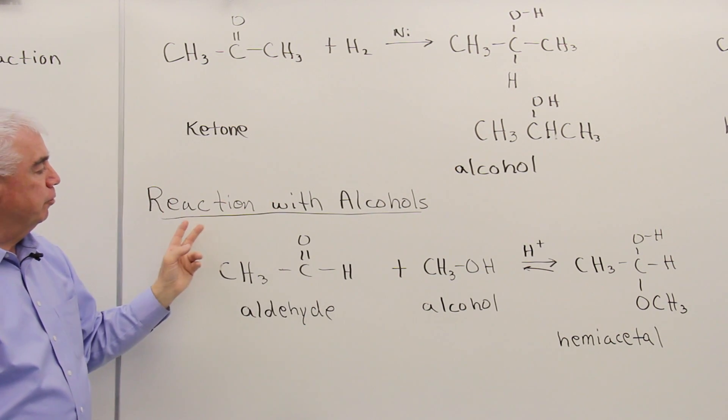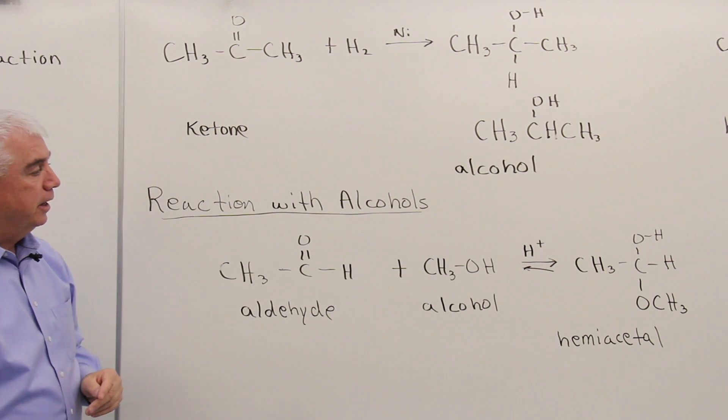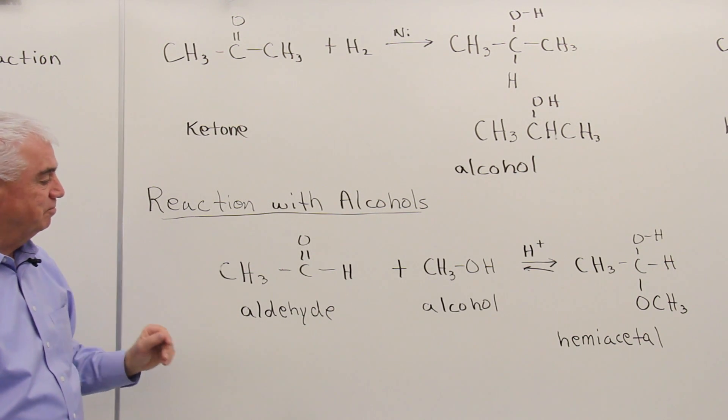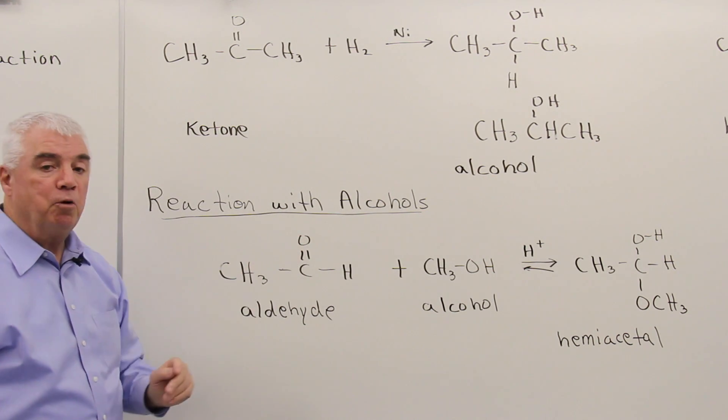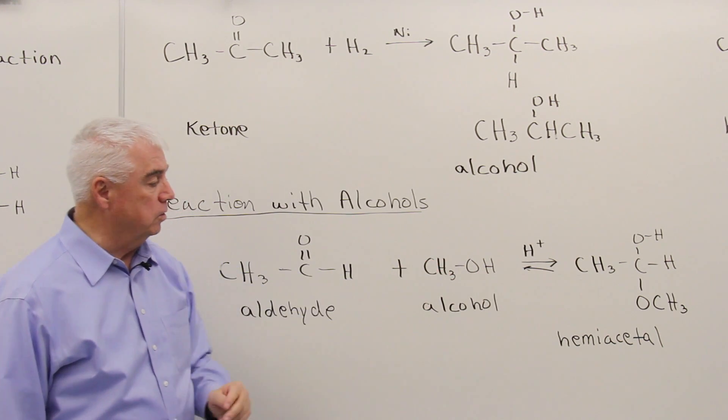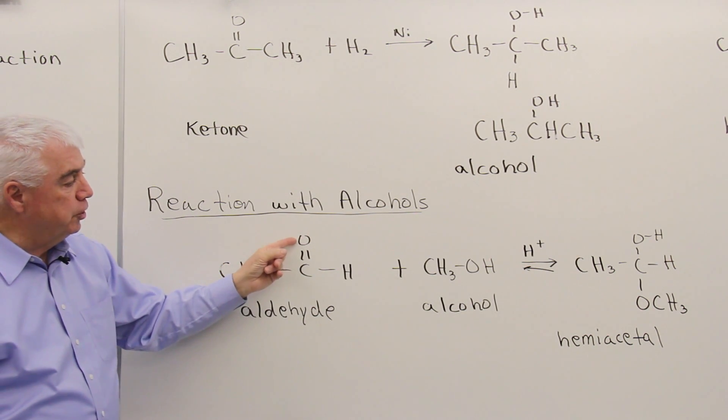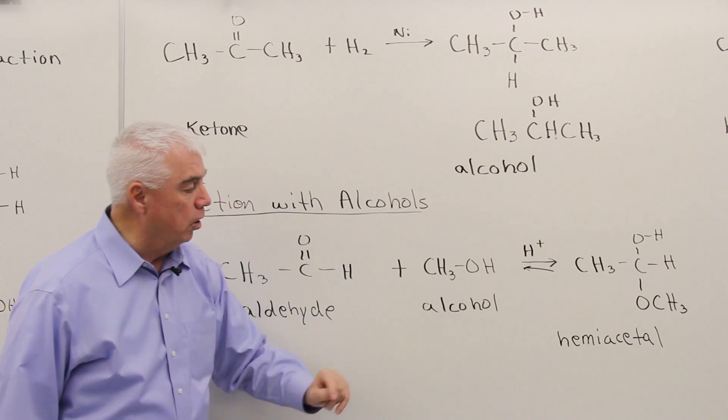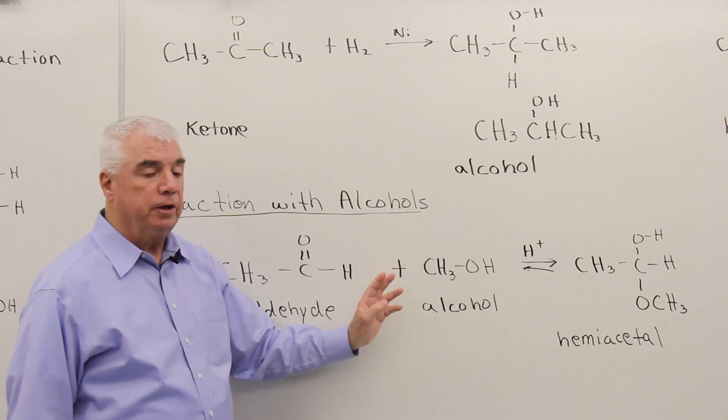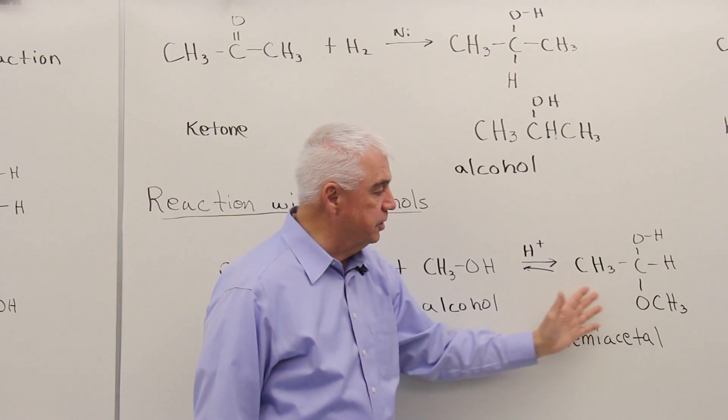The next category of reactions are reaction with alcohols. And this maybe is the most complex reaction that we've looked at so far. Let's see if we can make some sense of it. An aldehyde - remember the C double bond O is the reactive portion. It's so reactive, as a matter of fact, that it can react with alcohols. And the alcohol is going to add across this C double bond O. The oxygen will pick up the hydrogen from the alcohol, and the OCH₃ will attach to the carbon. It's a reversible reaction. It requires the presence of an acid catalyst. And the product that we get is the structure right here.